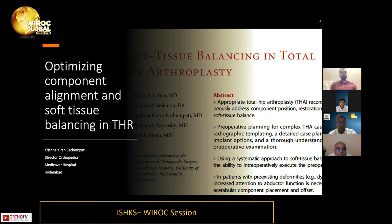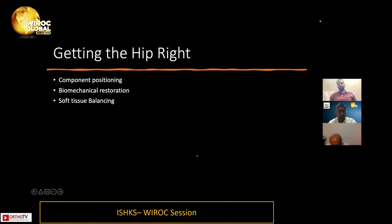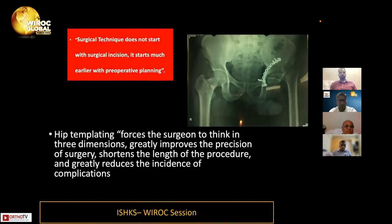My brief is to talk about optimizing component alignment and soft tissue balancing in PHR. Getting the hip right indicates good component positioning on the acetabular as well as the femoral side, some sort of biomechanical restoration based on the available femoral implants, and appropriate soft tissue balancing to optimize the functional outcome.